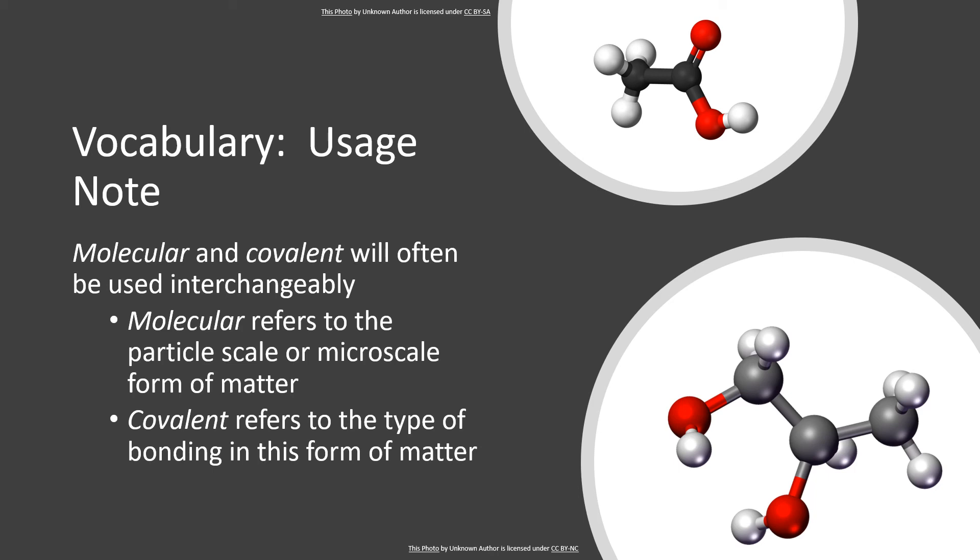However, in the types of compounds that form molecules, you'll discover that we have covalent bonding. So when we use the term covalent, we really should be referring to the type of bonding present. But things that have covalent bonding have molecular form. So molecular and covalent tend to be used interchangeably.